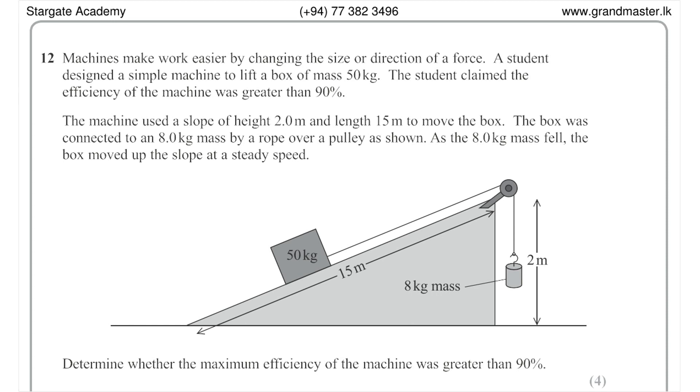As the 8 kg mass fell, the box moved up the slope at a steady speed. Determine whether the maximum efficiency of the machine was greater than 90%.